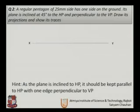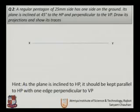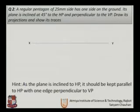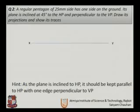The hint is: the plane is inclined to the HP and should be kept parallel to the HP with one edge perpendicular to the VP. Two conditions are given — the inclination with HP is 45 degrees, and it is perpendicular to the vertical plane. We will use this information while solving the problem.